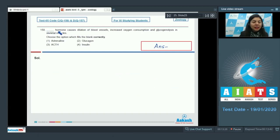Question 159. That hormone causes dilation of blood vessels, increased oxygen consumption and glycogenolysis in skeletal muscles. Choose the option which fills the blank correctly. Adrenaline, glucagon, ACTH, insulin.